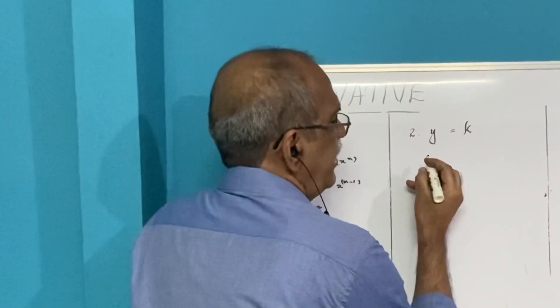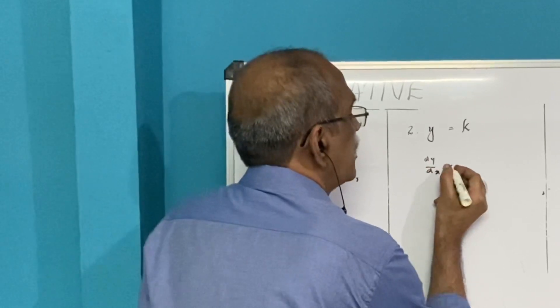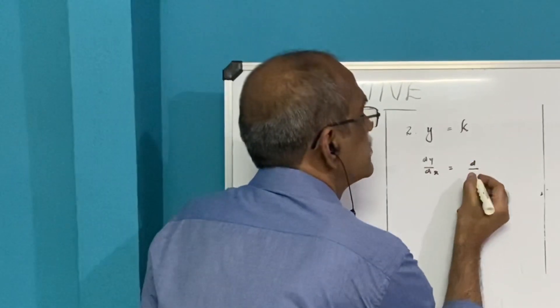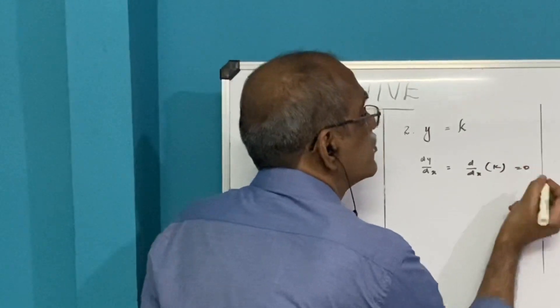In short, the differential of a constant function is always 0. So if y equals k, then dy/dx, which is d/dx of k, will be equal to 0.